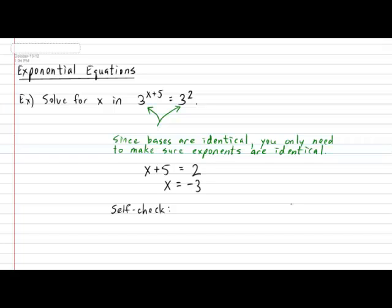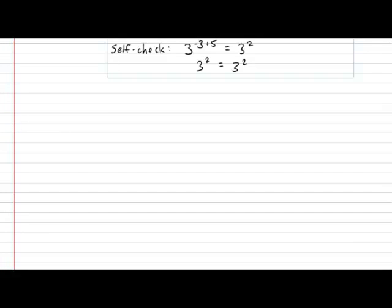So, for our expression, we get that the exponent is negative 3 plus 5 — is it actually equal to 3 exponent 2? On the left side, we have 3 exponent 2, which is in fact the same as the right side, 3 exponent 2. Now, if only all examples could be that easy.